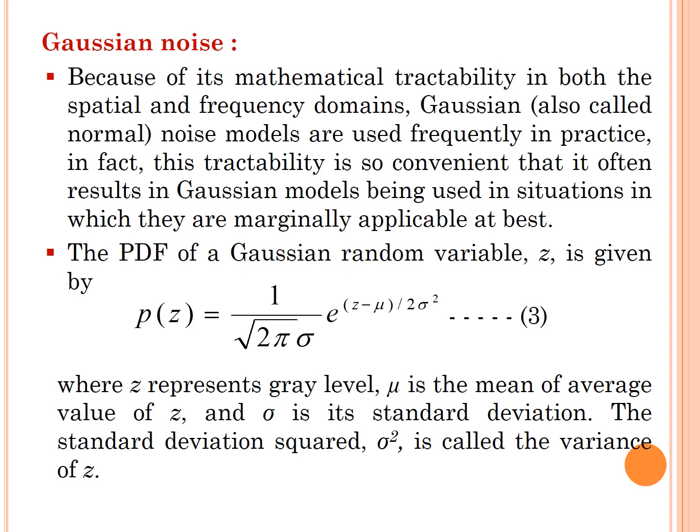First is the Gaussian noise. Because of its mathematical tractability in both the spatial and frequency domains, Gaussian, also called normal noise models, are used frequently in practice. In fact, this tractability is so convenient that it often results in Gaussian models being used in situations in which they are marginally applicable at best. The PDF of a Gaussian random variable z is given by p = 1/(√(2π)σ) × e^(-(z-μ)²/(2σ²)), where z represents the gray level, μ is the mean or average value of z, and σ is the standard deviation. The standard deviation squared, σ², is the variance of z.